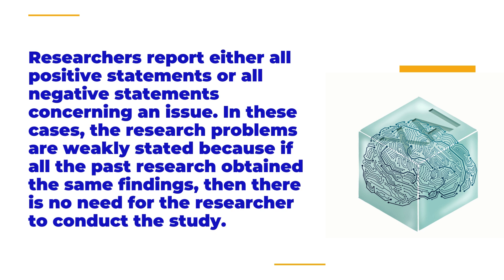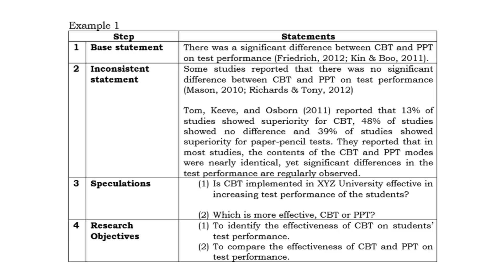Let us take a closer look and compare two examples that use the four-step method. As you can see in example number one, the researcher followed the four-step method, wherein the first step is to define the base statement, the second is to check for the inconsistent statement, third is the speculation, and the fourth is the framing of the research objective.